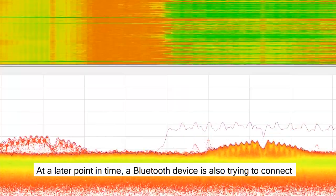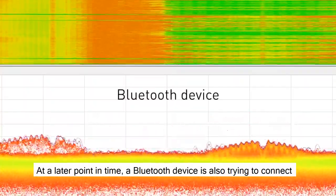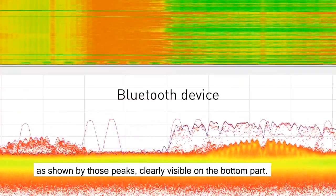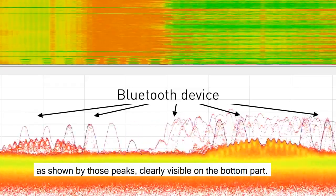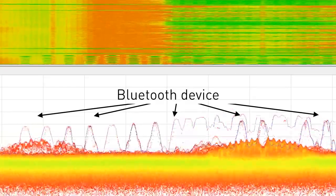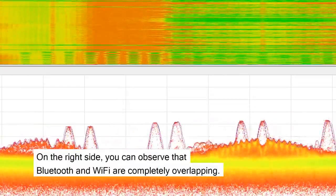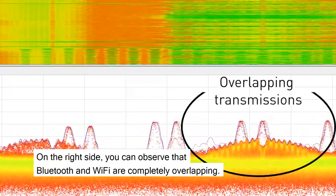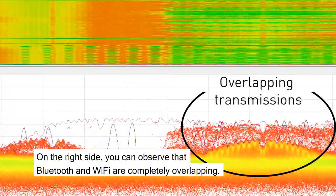At a later point in time, the Bluetooth device is also trying to connect, as shown by those peaks clearly visible on the bottom part. On the right side, you can observe that Bluetooth and Wi-Fi are completely overlapping.